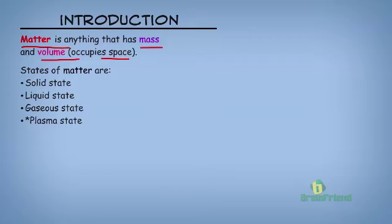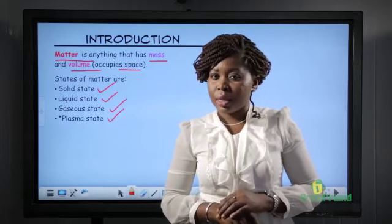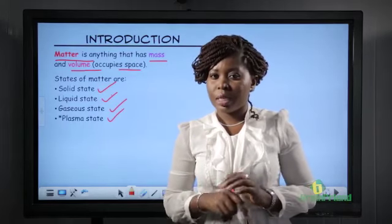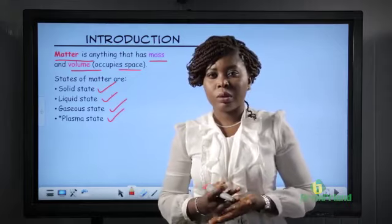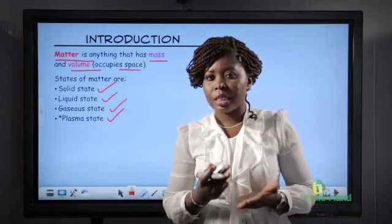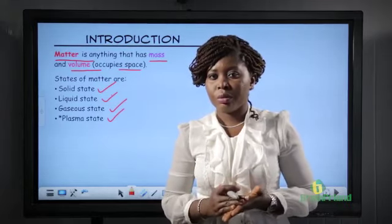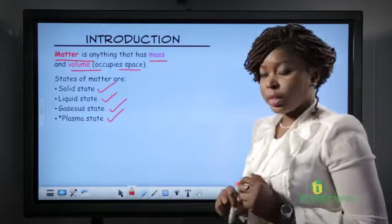Matter exists in four states: solid state, liquid state, gaseous state, and plasma state. Because matter has weight and we say it can occupy space, it means that there are particles that matter is made up of. Let's take a look at these particles.